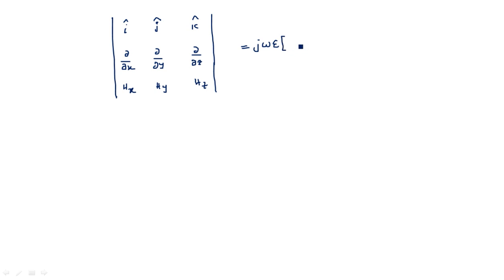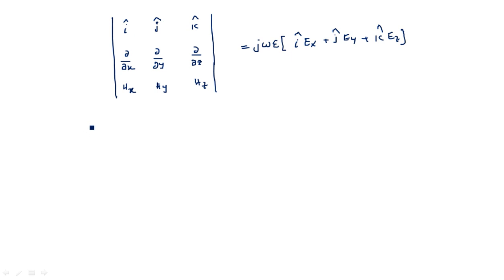E here has three components: i-cap Ex + j-cap Ey + k-cap Ez. Now, ∂/∂z is nothing but −γ, as already established in the previous video. So we substitute ∂/∂z = −γ in the determinant.